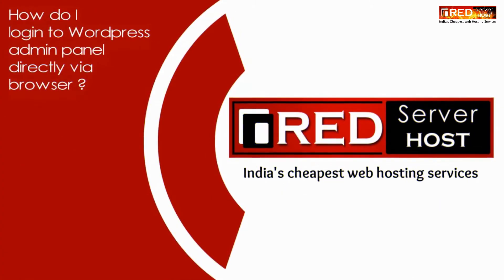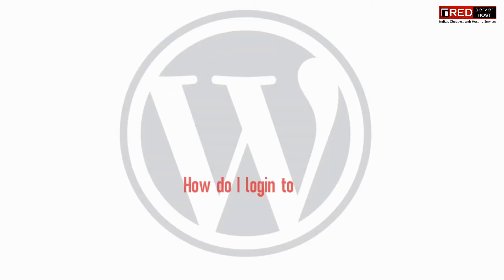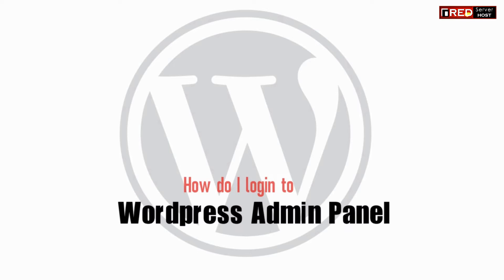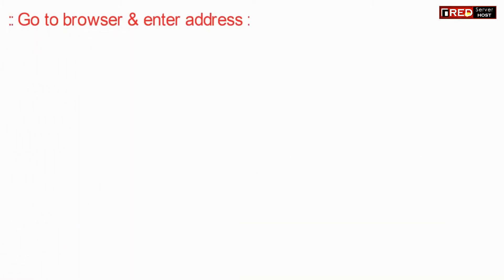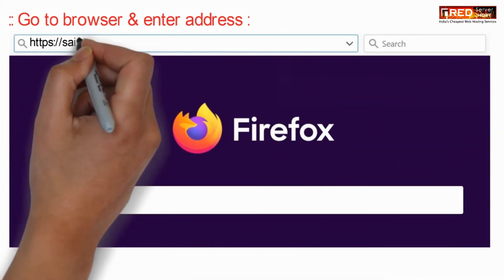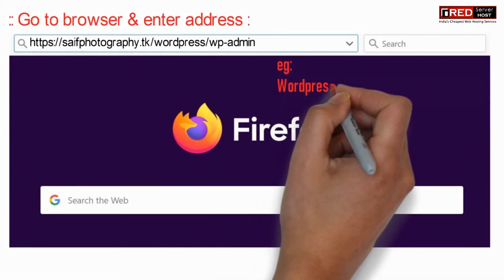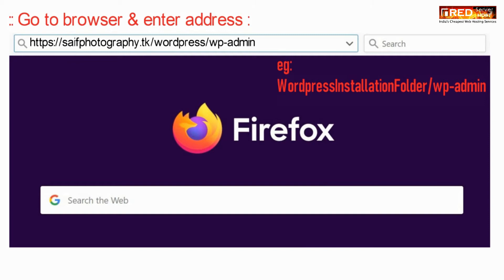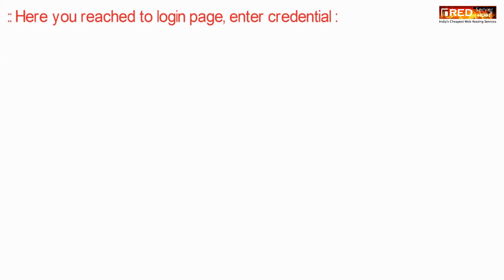Today in this video we will learn how to log into the WordPress admin panel directly via browser. Go to your browser and enter your domain name followed by /wp-admin. This works if WordPress is installed in the main directory.